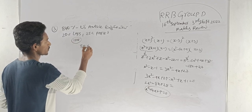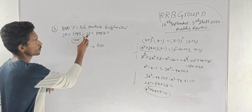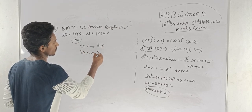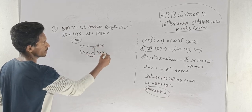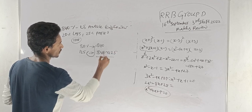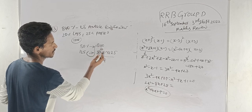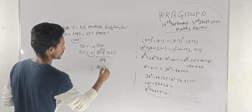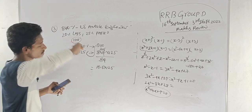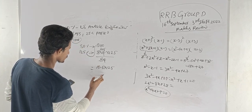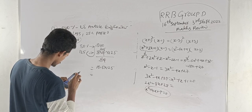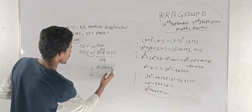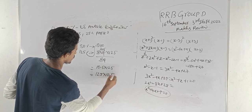20% loss means 80% value is 840. 25% profit means 125%. Cross multiply: 125 into 840, cancel zeros. 80 into 840, cancel — giving 10.5. So the answer is 125 into 10.5.